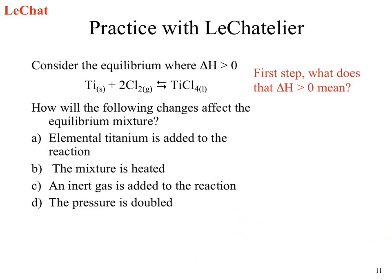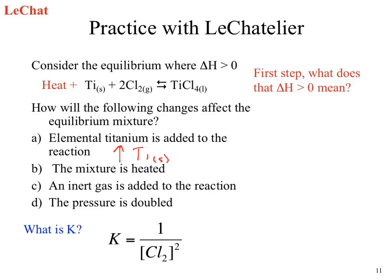So let's actually step through this now. We've got our K — it's now one over the concentration of chlorine gas. Let's go ahead and add elemental titanium. We're going to be increasing the concentration of titanium solid. Does titanium solid show up in your equilibrium expression? No. So if we change that concentration, does it affect it? No.